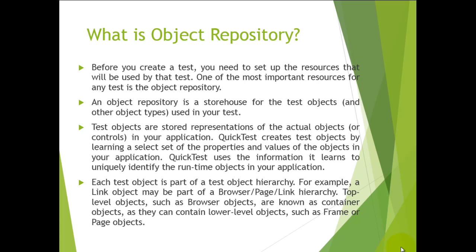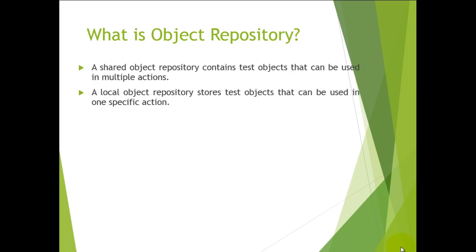There are two kinds of repositories in QTP: shared and local. Shared object repository contains objects that can be used across your actions. For example, if you have username, password, OK, and Cancel — these four objects can be used across all actions. If you convert a local object repository to a shared one, QTP can use all the objects across actions. With a local repository, you cannot use the objects during replay across actions.